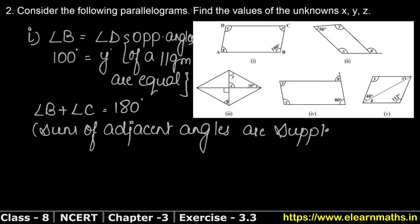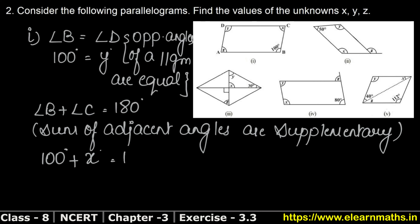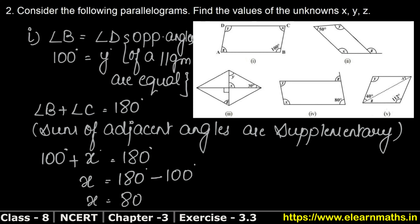Adjacent angles are supplementary, which means their sum is 180 degrees. So angle B is 100 degrees and angle C is x. Therefore: 100 plus x equals 180 degrees. Solving this, x equals 180 minus 100, which gives x equals 80 degrees.